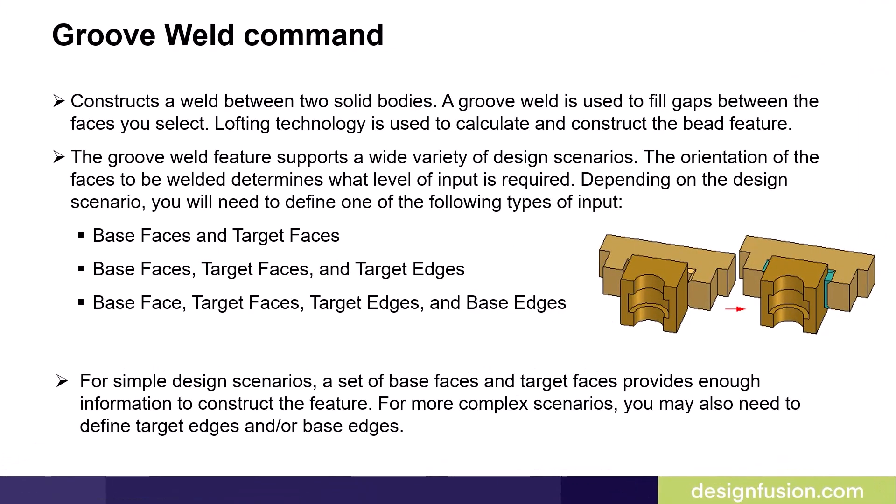The GrooveWeld command constructs a weld between two solid bodies. A GrooveWeld is used to fill gaps between the faces you select. Lofting technology is used to calculate and construct the bead feature, and the GrooveWeld feature supports a wide variety of design scenarios. The orientation of the faces to be welded determines what level of input is required. For simple design scenarios, a set of base faces and target faces provides enough information to construct the feature. For more complex scenarios, you may also need to define target edges and/or base edges.